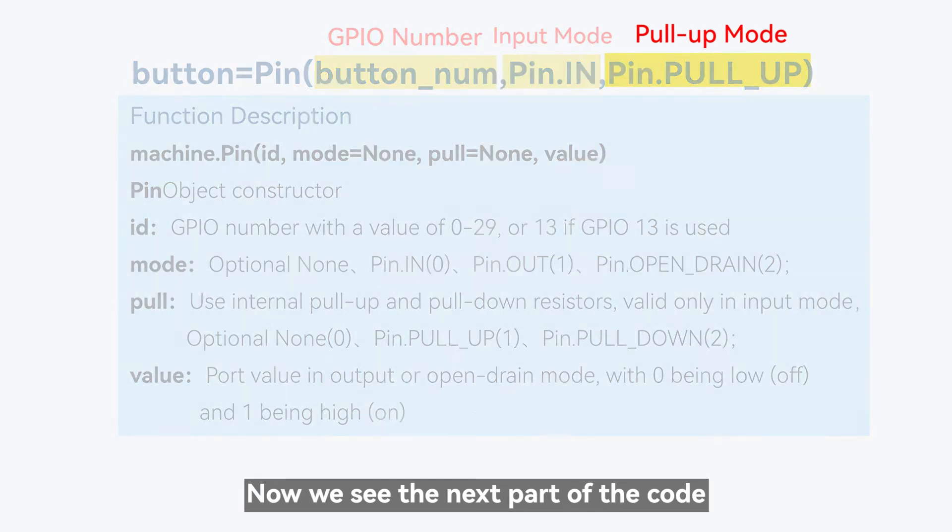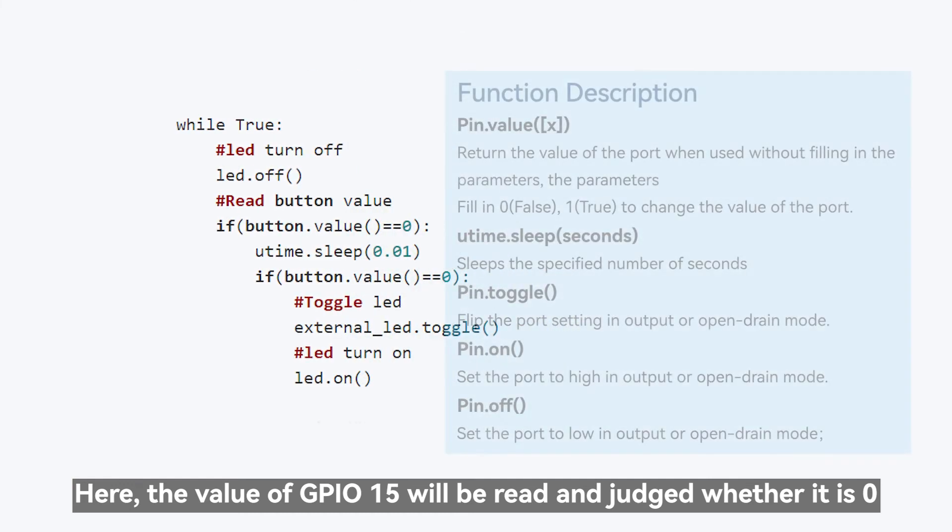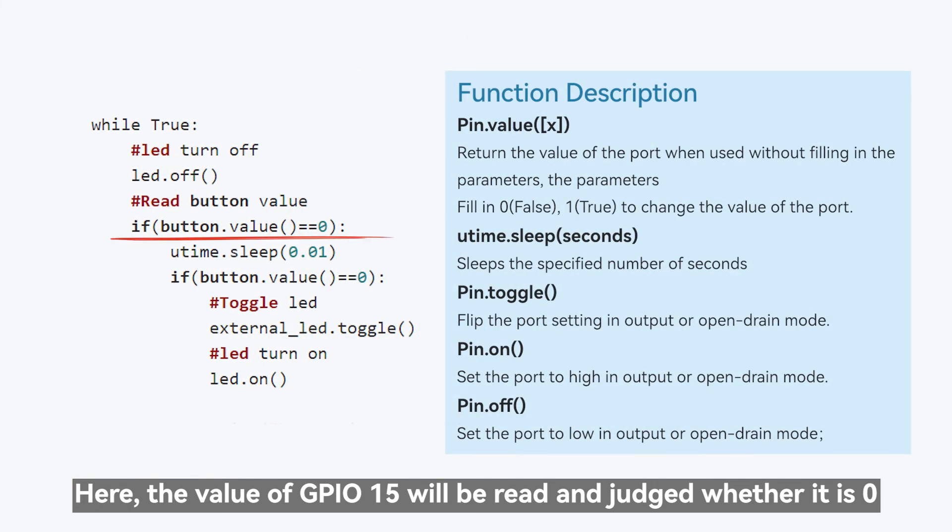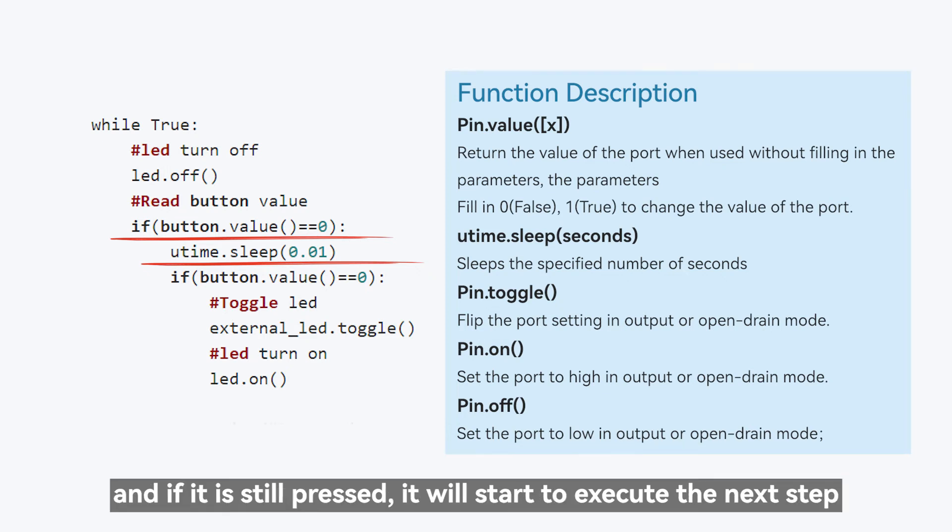Now we see the next part of the code. Here, the value of GPIO 15 will be read and judged whether it is zero. If it is zero, it means that the button is pressed, it will wait 10 milliseconds to redetermine whether the button is pressed. And if it is still pressed, it will start to execute the next step.